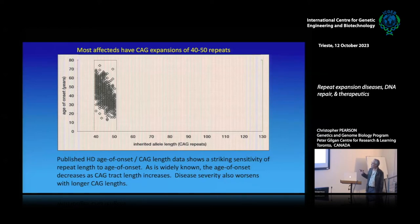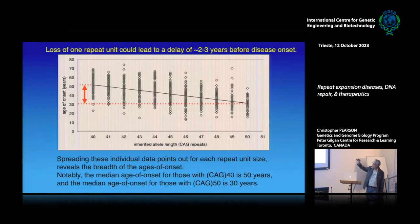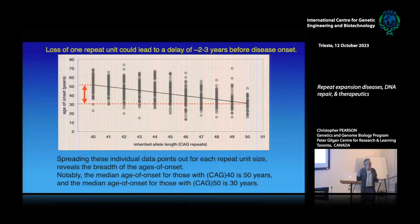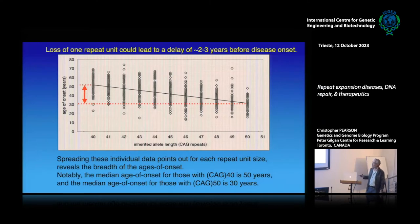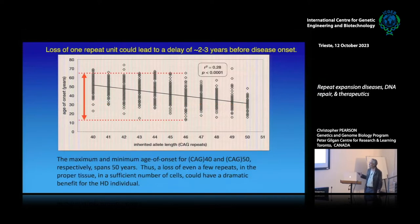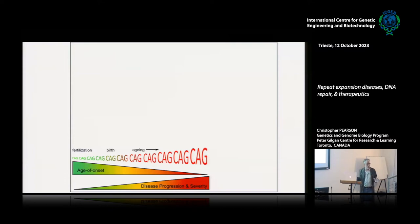Because most people inherit around 40 to 50 repeats, if you spread out the data for each repeat unit, you find that changing the number of repeats by one can change disease onset by up to three years. That tells you that if you modify the repeat length you can modify onset — you can make it worse or better. We'd like to make it better, and you don't have to change it by a lot, just by a few.